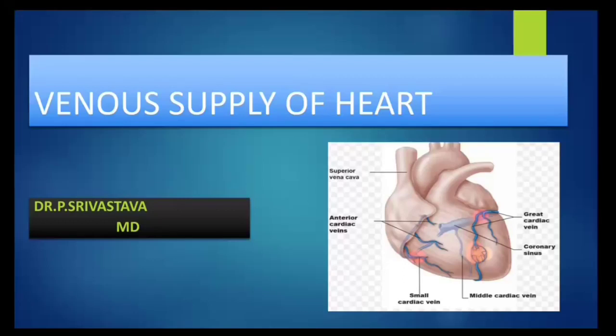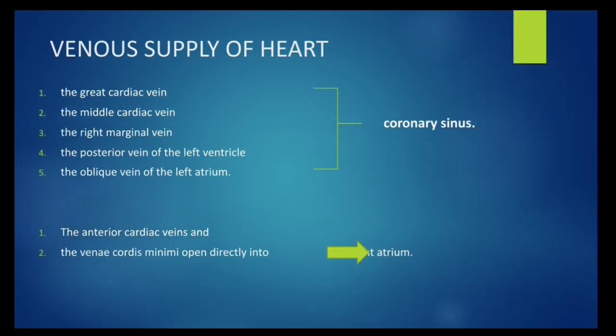Hello everyone, myself Dr. P. Surastwa, and today I am going through the topic venous supply of the heart. The following veins directly open into the coronary sinus: the great cardiac vein, the middle cardiac vein, the right marginal vein, the posterior vein of the left ventricle, and the oblique vein of the left atrium. The anterior cardiac vein and the venae cordis minimae directly open into the right atrium.